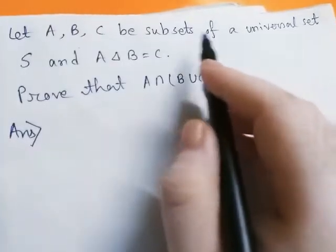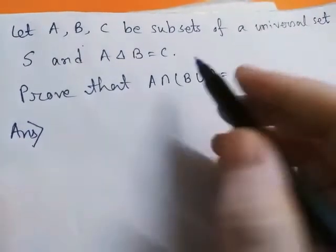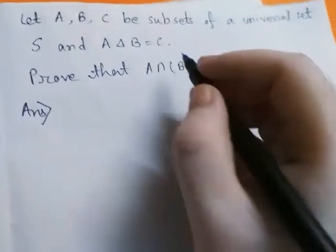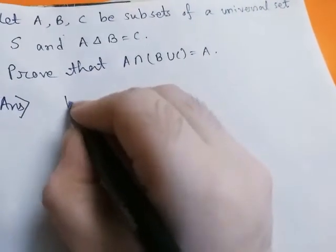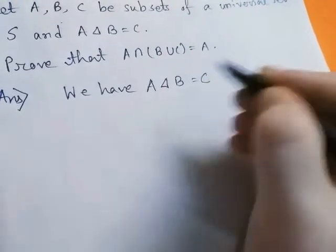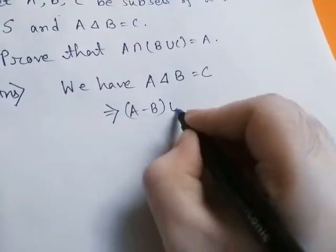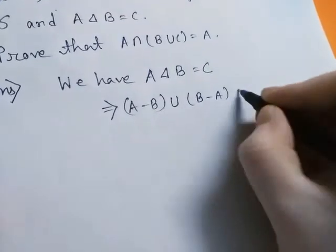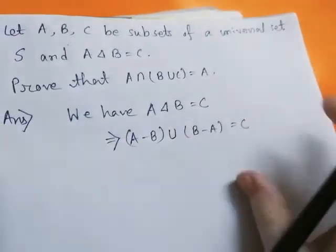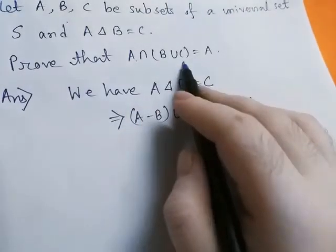Let A, B be subsets of universal set S, and A△B = C, that is the symmetric difference of two sets A and B equals C. We have to prove that A∩(B∪C) = A. We have A△B = C, which implies (A minus B) ∪ (B minus A) = C, by definition of symmetric difference.